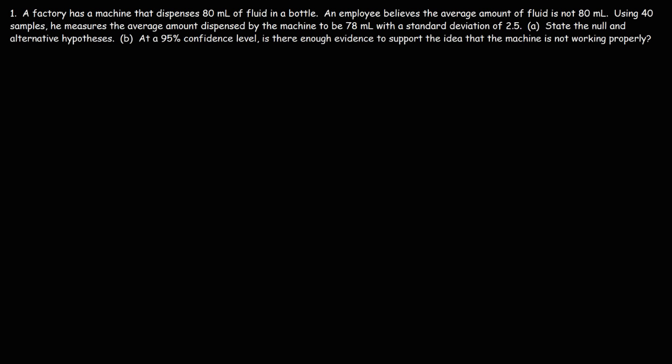In this video we're going to work on some problems that relate to hypothesis testing of the population mean. Number one: a factory has a machine that dispenses 80 milliliters of fluid in a bottle. An employee believes the average amount of fluid is not 80 milliliters. Using 40 samples, he measures the average amount dispensed by the machine to be 78 milliliters with a standard deviation of 2.5. Part A: state the null and alternative hypotheses.